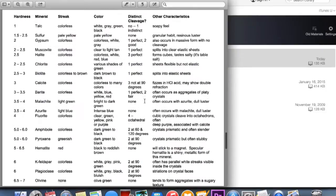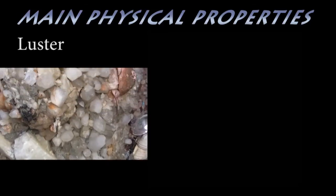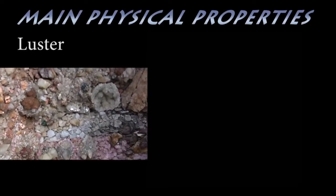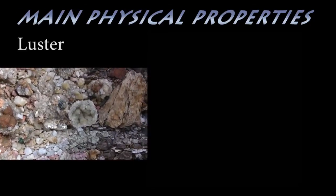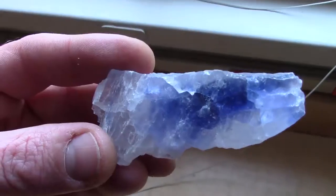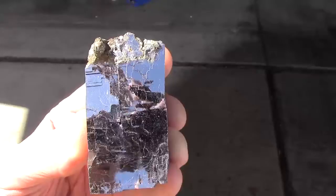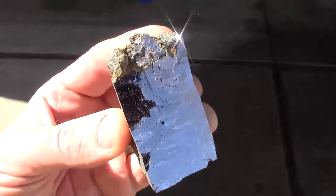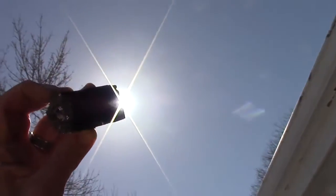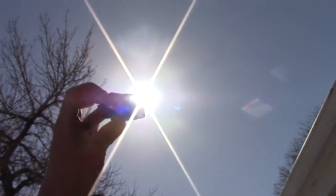The first and most basic physical property is its luster, that is the way light reflects off of or transmits through the specimen. There are two main divisions we are concerned with, which are metallic luster and non-metallic luster. Metallic minerals reflect light well, but do not transmit light at all. We say they are opaque to light.